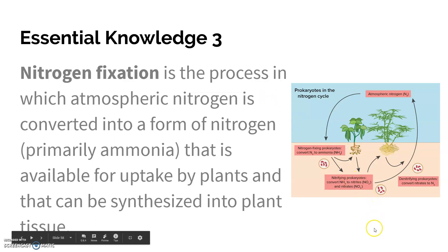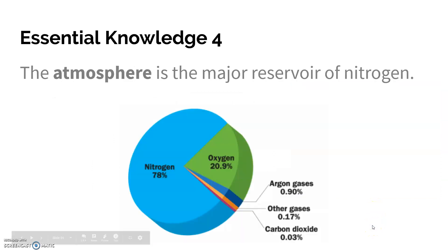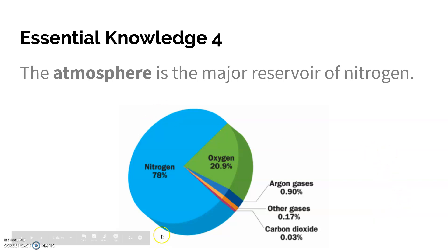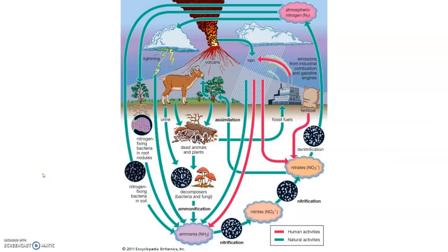We can then get that nitrogen when we eat plants or animals that ate those plants. Another important thing to know about the nitrogen cycle is that the atmosphere is a major reservoir, holding a huge portion of Earth's nitrogen. I want to point out a diagram here that shows the human impact on the nitrogen cycle.